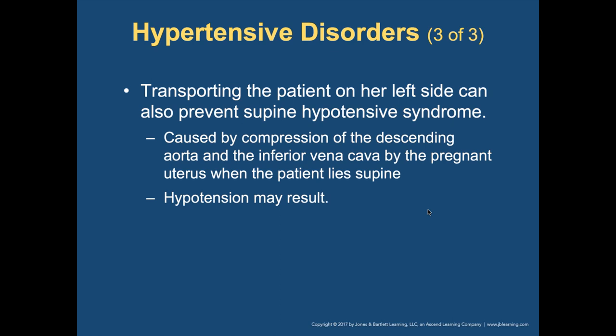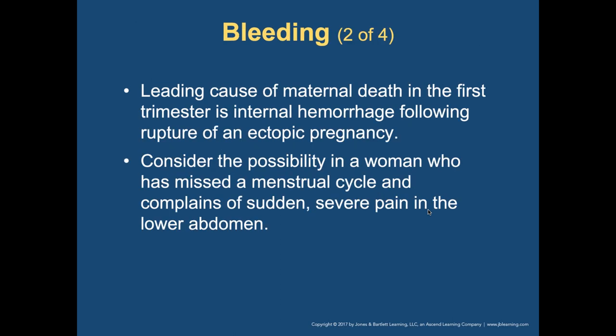Transporting the patient on her left side can prevent supine hypotensive syndrome — very important that pregnant patients stay on their left side as it reduces stress on the body. Regarding ectopic pregnancy: the embryo develops outside of the uterus, most often in the fallopian tubes. This occurs about once every 300 pregnancies. Internal bleeding may be a sign. One of the leading causes of maternal death in the first trimester is internal hemorrhaging into the abdomen. Suspect ectopic pregnancy in a woman who has missed a menstrual cycle and complains of sudden, severe, usually unilateral pain in the lower abdomen.